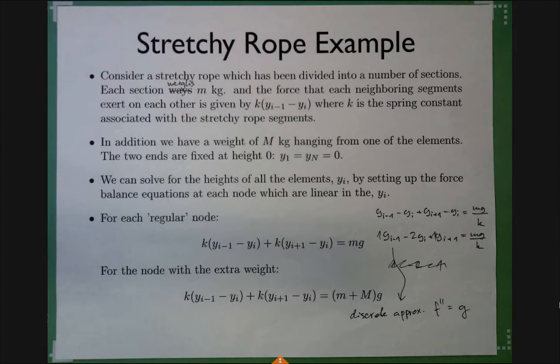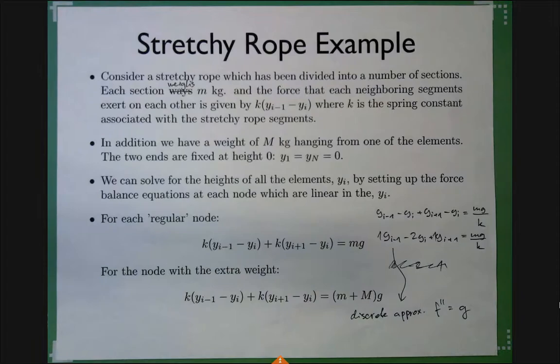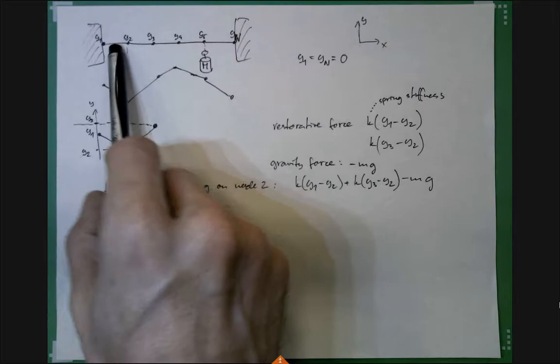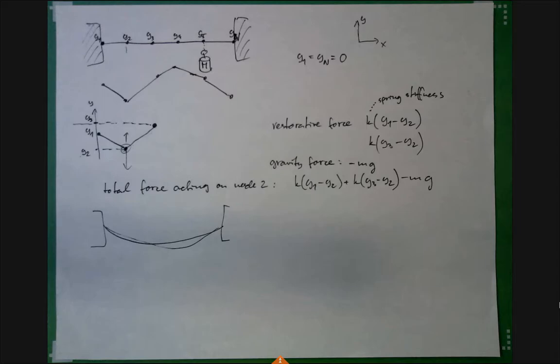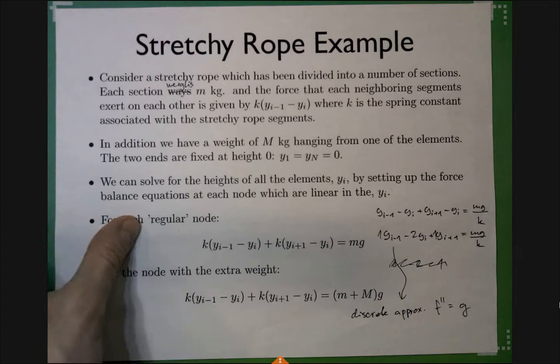Tomorrow I think I will have released a new project related to what we're talking about now — some interesting examples of linear systems, cool problems you can solve with linear systems. We were talking about the stretchy rope problem before, which models a physical system: a 1D rope where each node has some weight, subject to boundary conditions and gravity. That led to what we call the 1D Poisson equation.